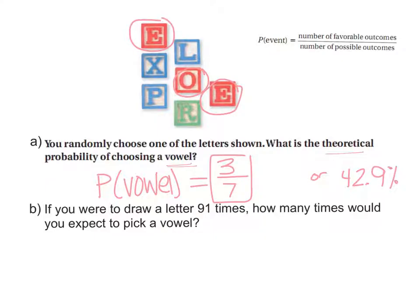Because now we're going to use that to make a prediction. If we were to draw a letter 91 times, how many times would we expect to pick a vowel? Well, we know that the probability of getting a vowel is three out of seven, based on what we have up above here. So I might even put on here like three vowel, just as a reminder to myself that that's the vowels on top and the total on bottom.